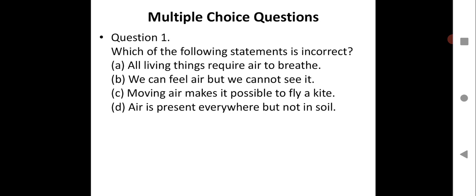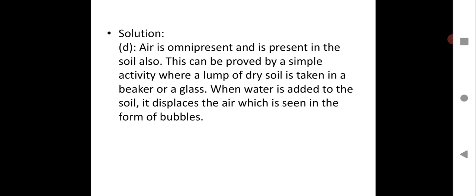Second option: we can feel air but we cannot see it. Third option: moving air makes it possible to fly a kite. Fourth option: air is present everywhere but not in soil. You have learned about air, its various components, different gases, and how air is useful to all living organisms on Earth. The correct answer is D.